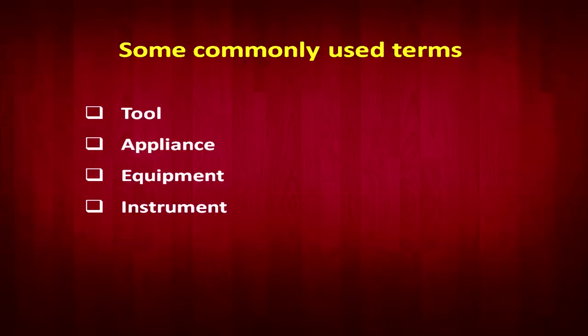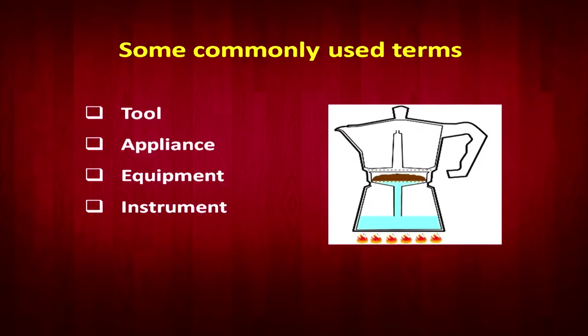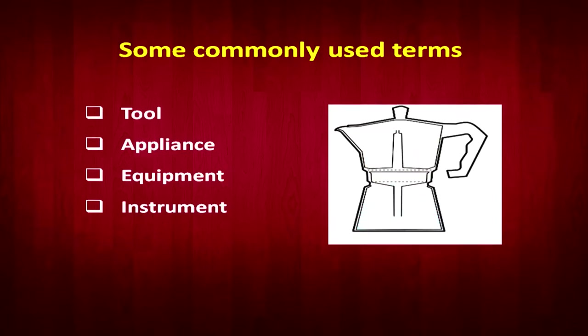There are various terms we commonly use in household equipment: tools, appliances, equipment, and instruments. In this picture you can see the percolator and how it functions, but we are talking about the variety of tools and appliances which we commonly use in the home.